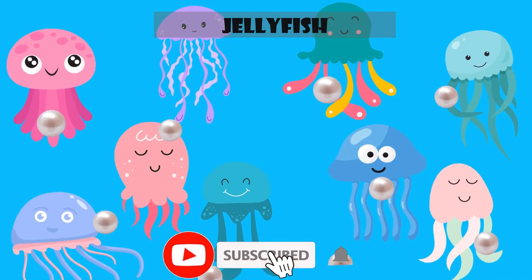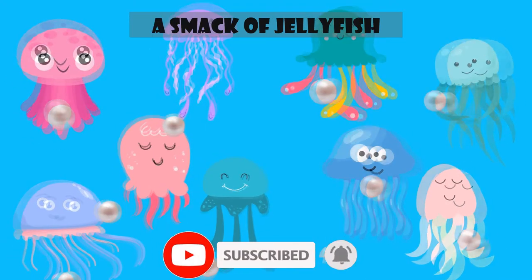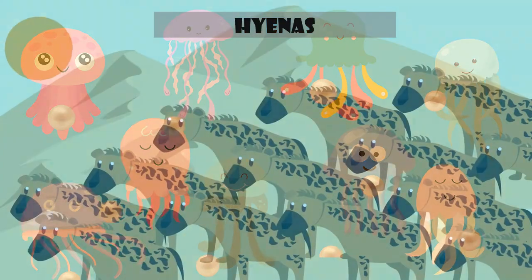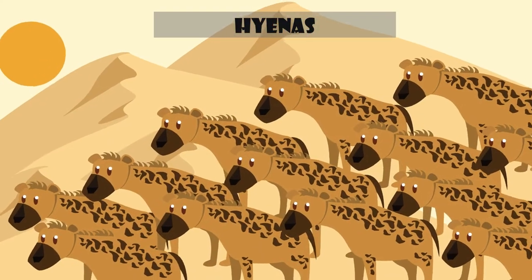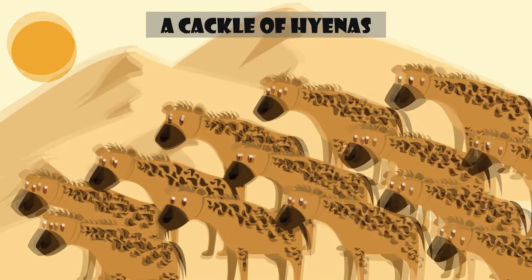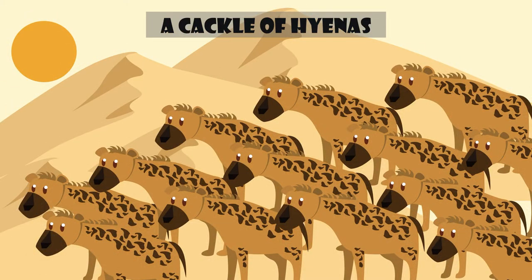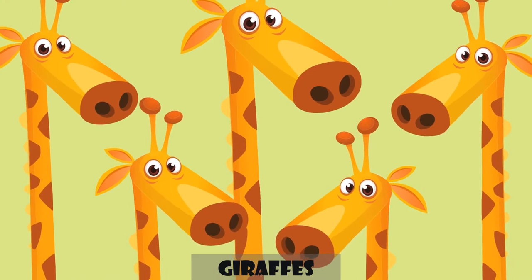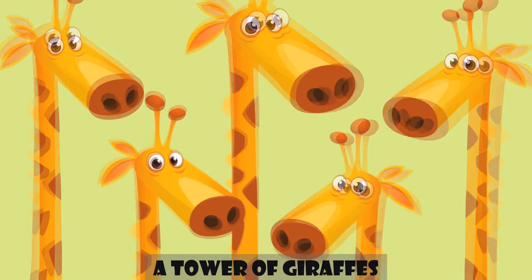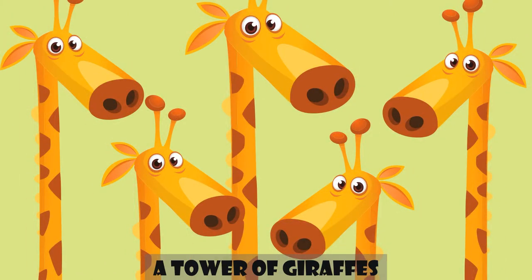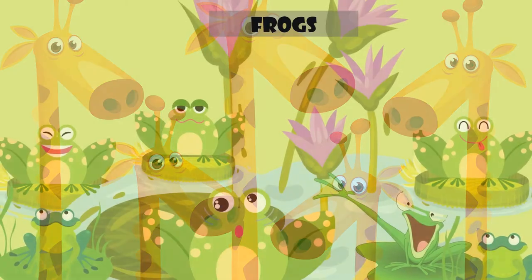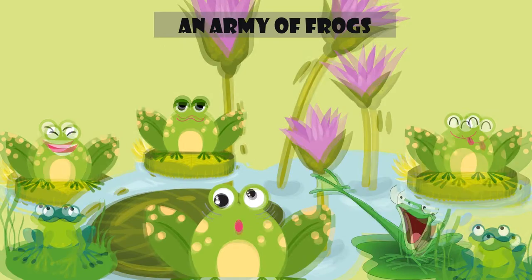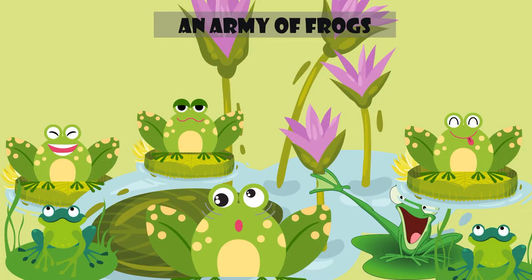A group of jellyfish is called a smack of jellyfish. A group of hyenas is called a cackle of hyenas. A group of giraffes is called a tower of giraffes. A group of frogs is called an army of frogs.